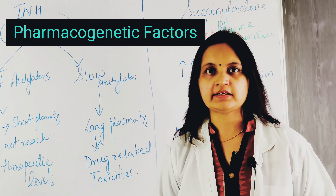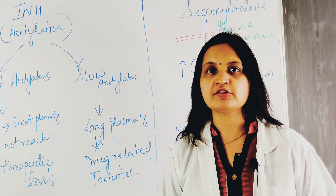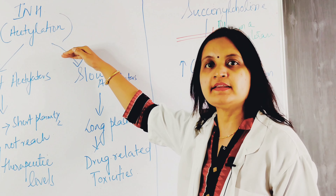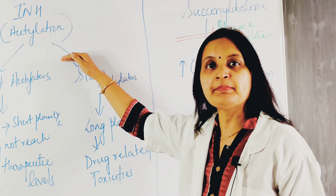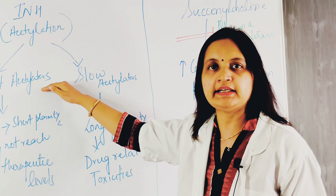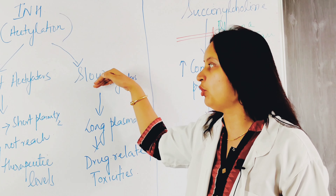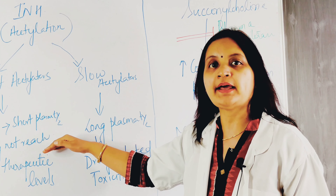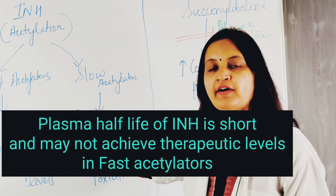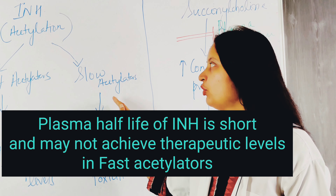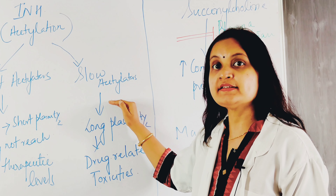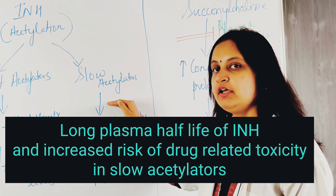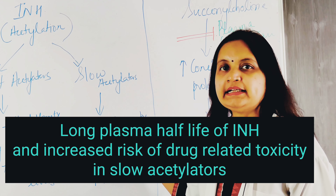The next factor is pharmacogenetic factors, which affect drug response due to inter-individual genetic variation. The metabolism of isoniazid occurs by acetylation in the presence of an enzyme known as acetyltransferase. Some people metabolize the drug fast and are known as fast acetylators, while others metabolize it slowly and are known as slow acetylators. In fast acetylators, isoniazid may not reach therapeutic levels and has a shorter plasma half-life. Slow acetylators have increased drug concentration in the plasma and a longer plasma half-life, leading to increased risk for drug-related toxicities.